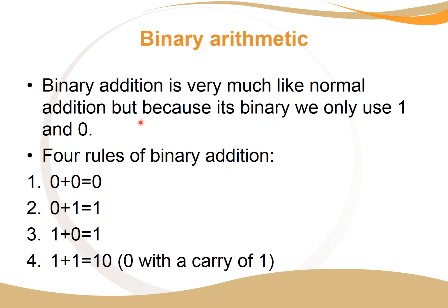Binary addition is very much like normal addition, but we only use ones and zeros. There are four basic rules: zero plus zero equals zero; zero plus one is one; one plus zero is one — be aware these may differ in other operations, so the order matters — and one plus one equals zero with a carry of one.